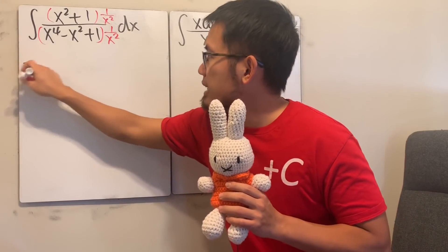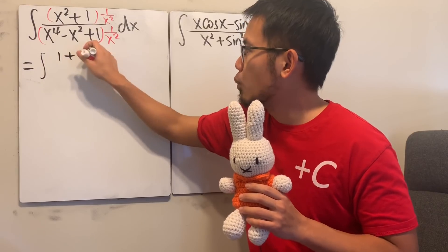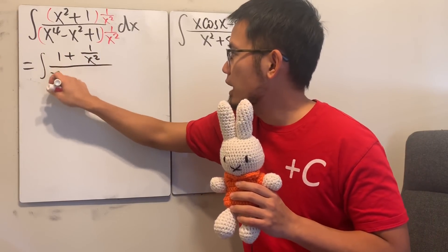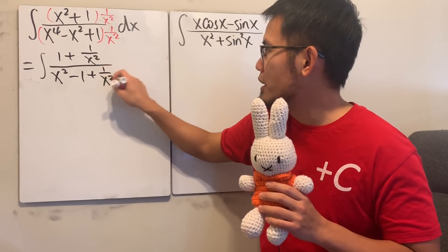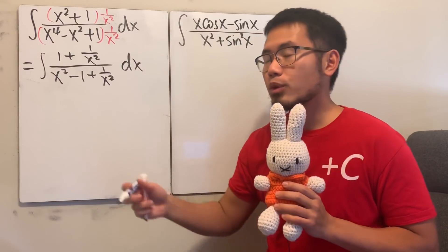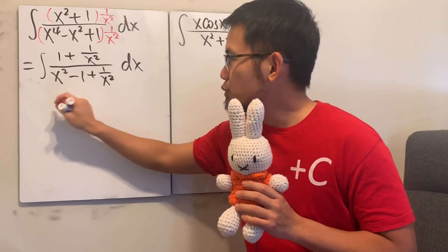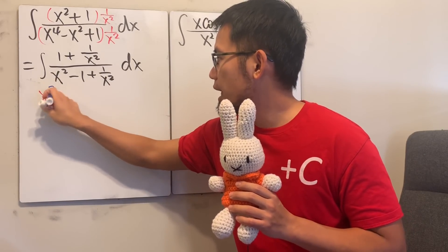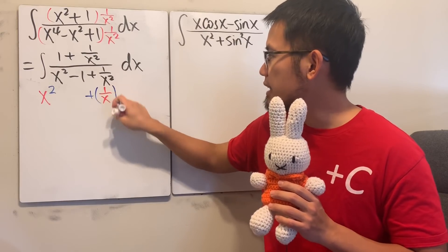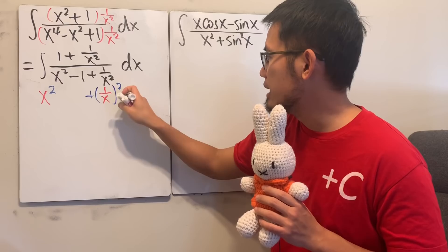And then right here, we will see that the top, after we multiply that out, we will get 1 plus 1 over x squared over, multiply the bottom, x squared minus 1 plus 1 over x squared, like this, which is very nice. Then, as promised, I'm going to complete the square for you guys on the bottom.